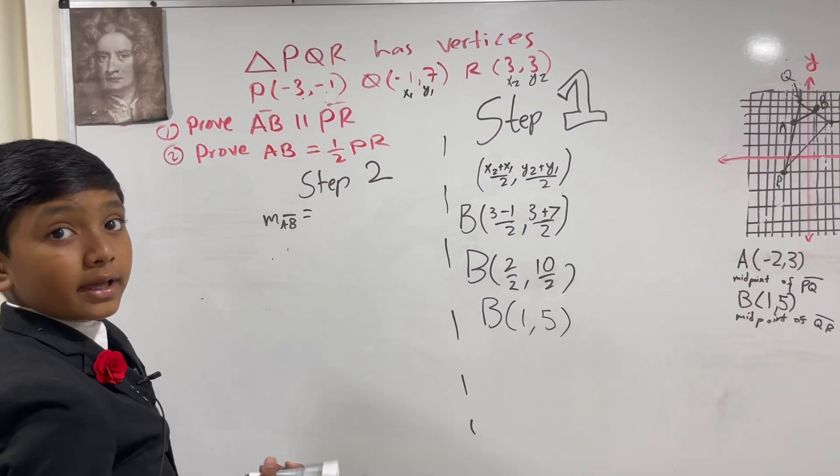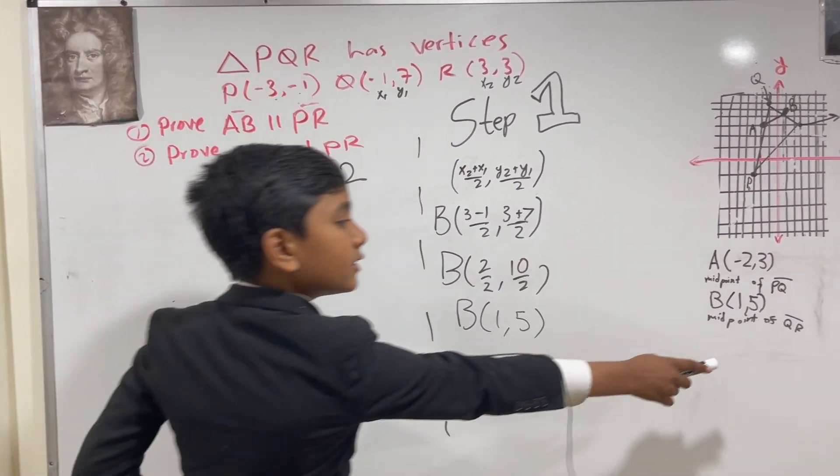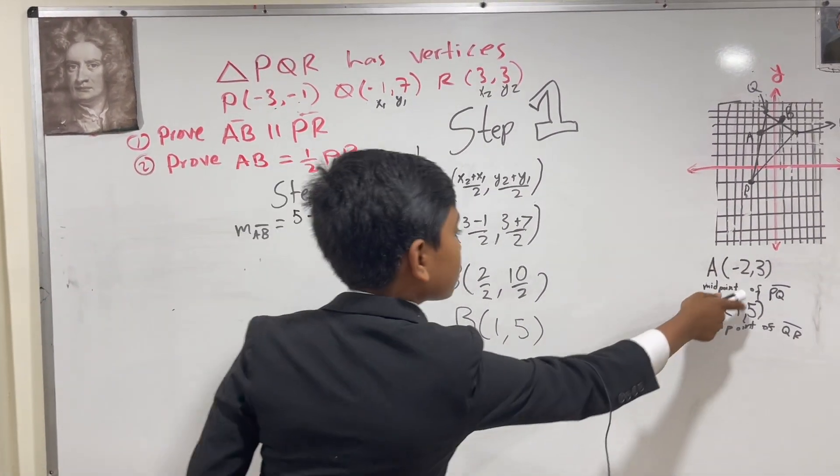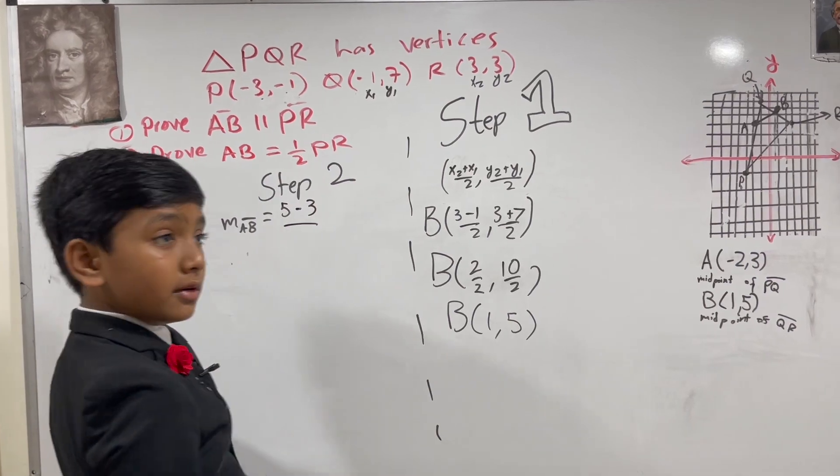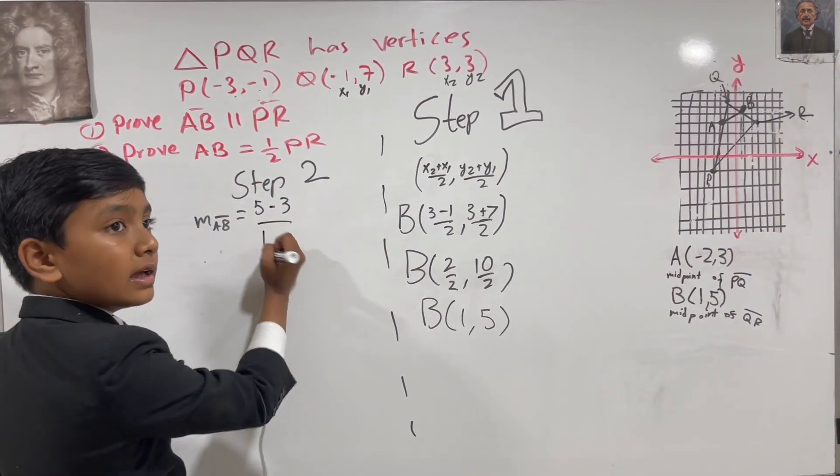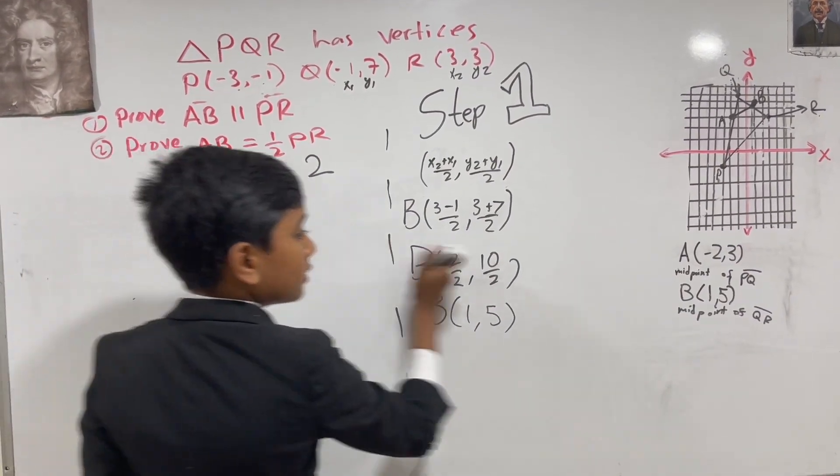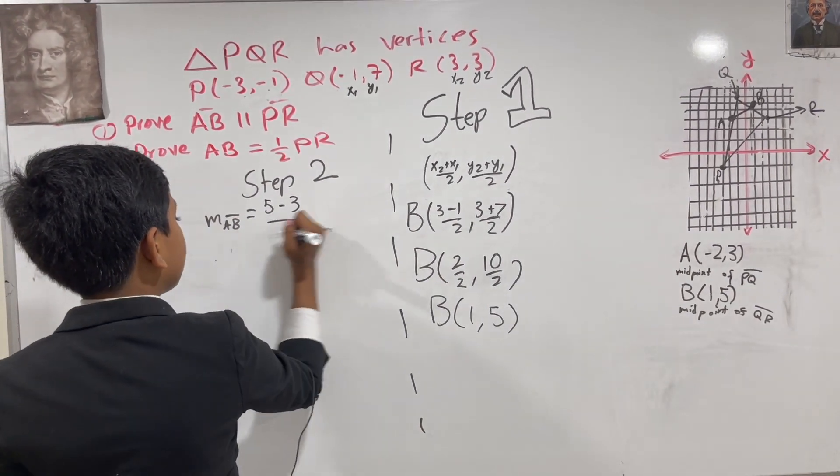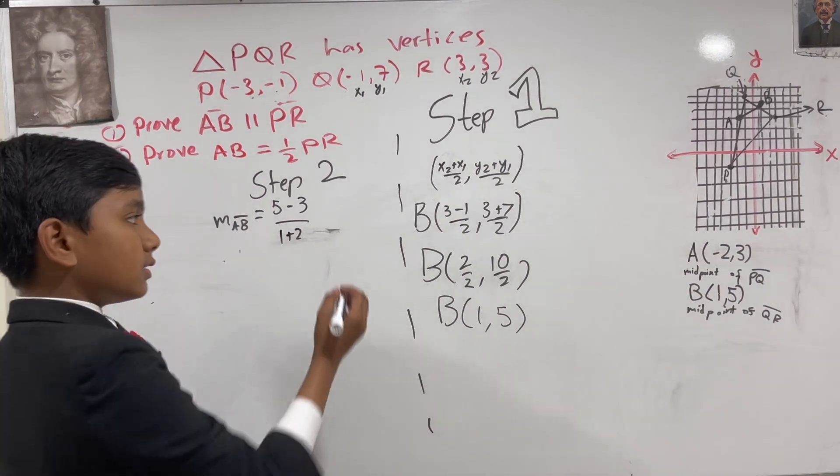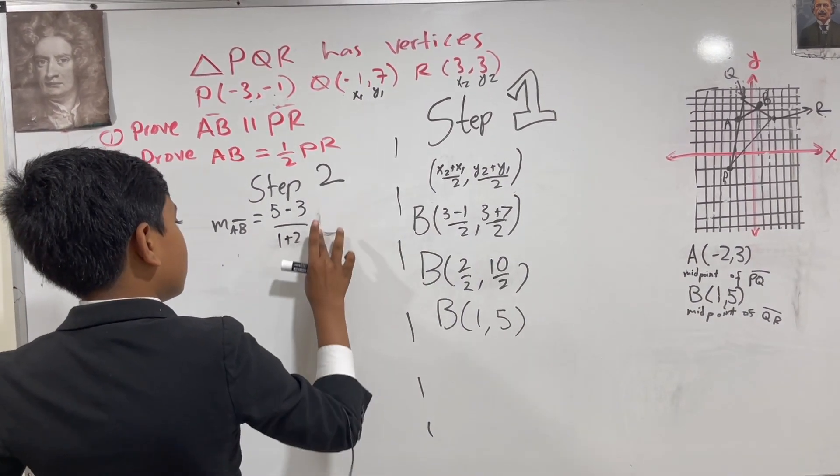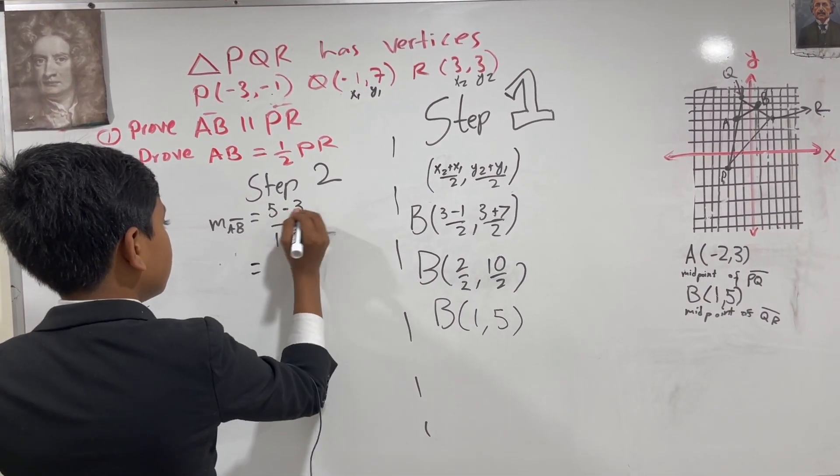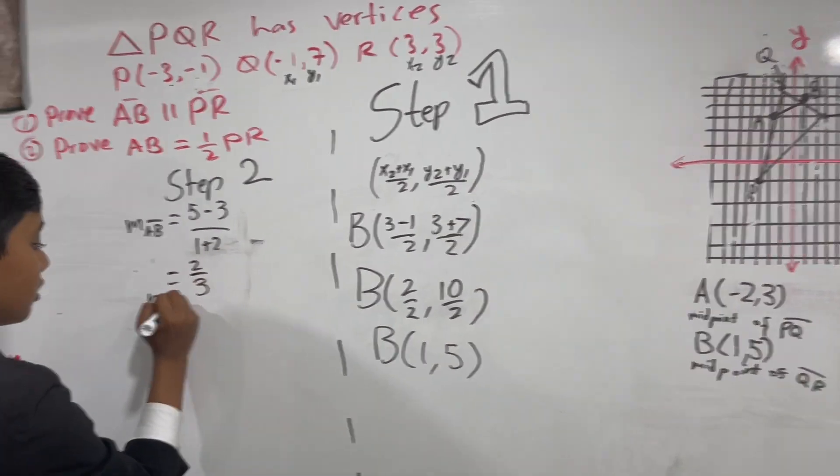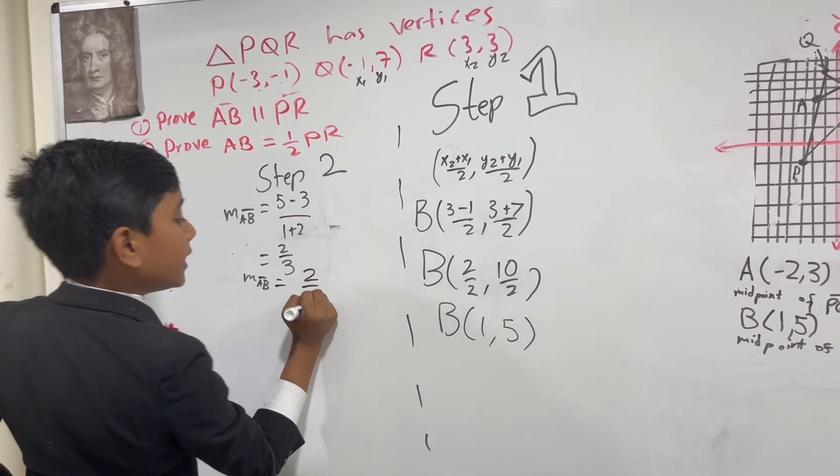So what is Y2? It's 5. Y1 is 3. X2 is 1. And X1 is negative 2. This gives us 1 plus 2. 5 minus 3 is 2 over 3. So now we know the slope of AB.